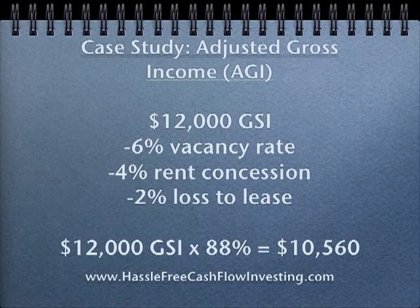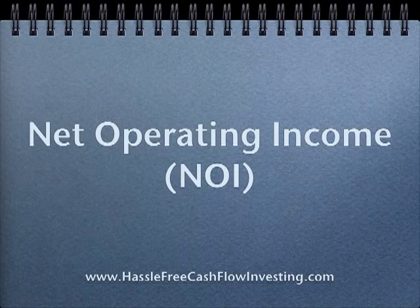In this case study, we have 6% vacancy plus 4% concessions plus 2% loss to lease, giving a 12% total adjustment — a reduction in gross scheduled income. So 100% minus 12% gives us 88%. Another way: $12,000 times 12%, then subtract from $12,000. Either way, $12,000 GSI times 88% gives us $10,560 of adjusted gross income.